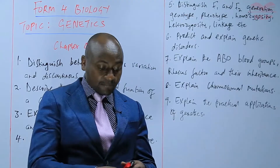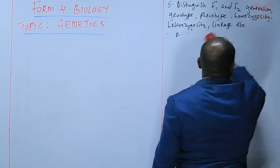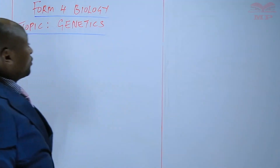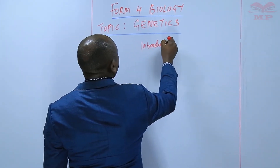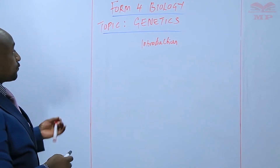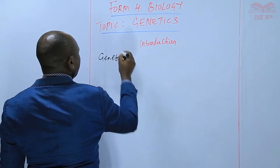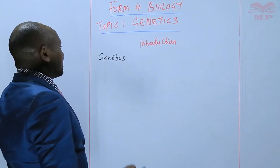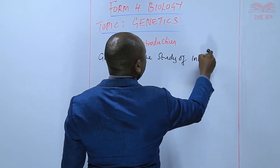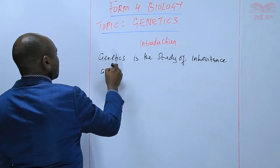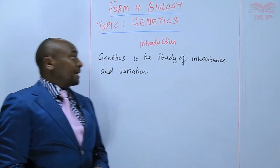Having gone through the chapter objectives, I will now have an introduction to genetics. First of all, I will start by explaining the term genetics. This is one of the branches of biology, and we say that genetics is the study of inheritance and variation.